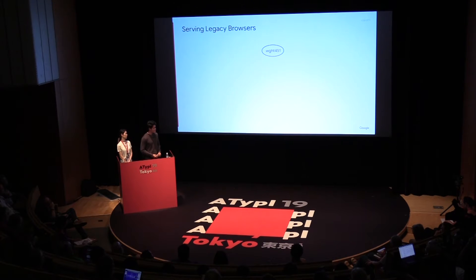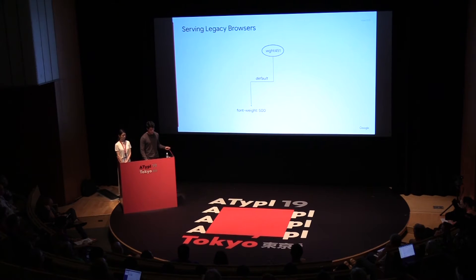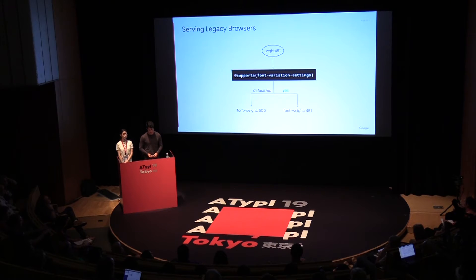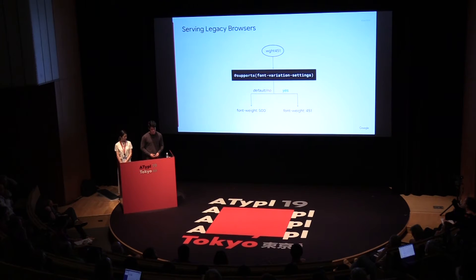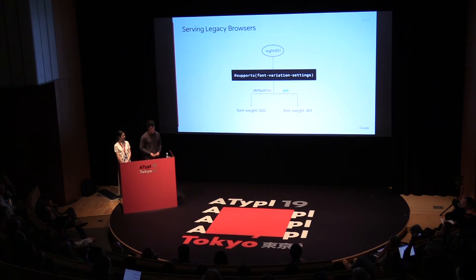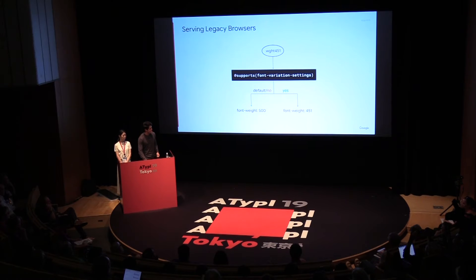For example, you can define a CSS class for setting font weight to 451, but by default have it set the font weight to 500. Then if @supports determines that the browser does indeed support variable fonts, the class can be overridden to actually set font weight to 451. We're actively exploring ways to take some of this burden away from web designers and developers. But this issue of legacy browser support remains an open problem. Nevertheless, in time we hope that this 15% number will drop, and hopefully reach the point that we can eventually ignore this lack of VF support in good conscience.